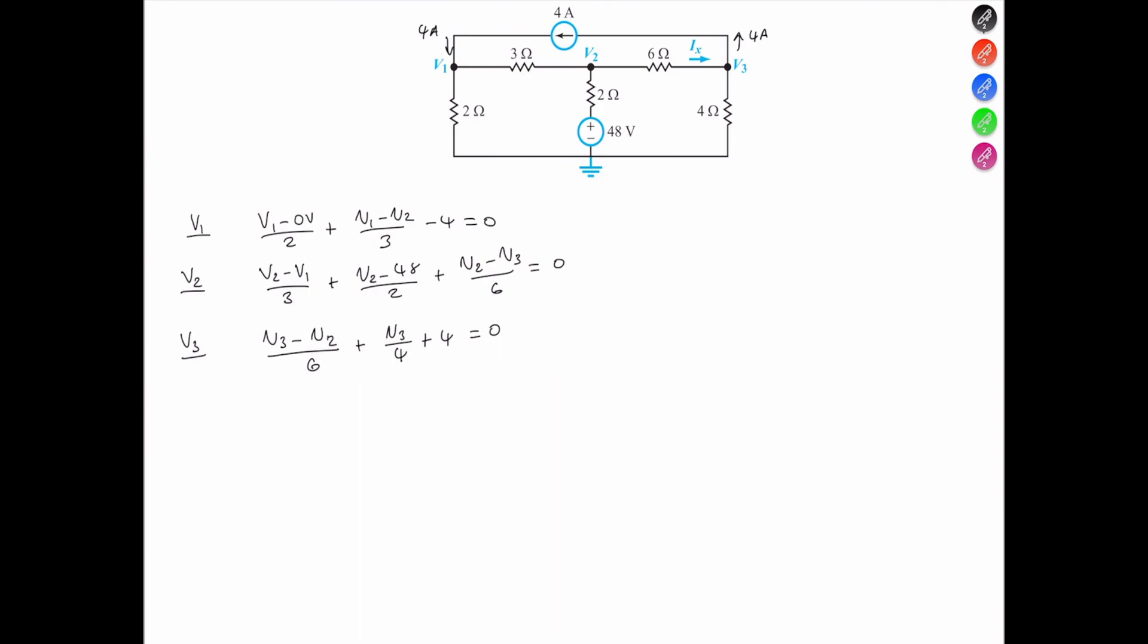Now, simplification of the 3 equations leads to 24 volts equals 5 times V1 minus 2 times V2.